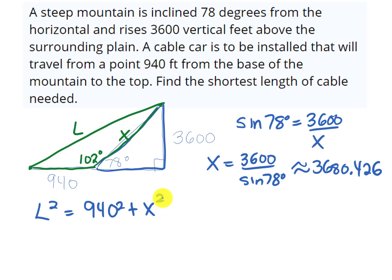And the reason I'm going to call it X squared is because my calculator has this value in it as the answer, so I am going to just do answer squared when I need X. And then it's minus 2 times the product of those sides, so 940 times X times the cosine of the angle between those sides, which is 102 degrees.